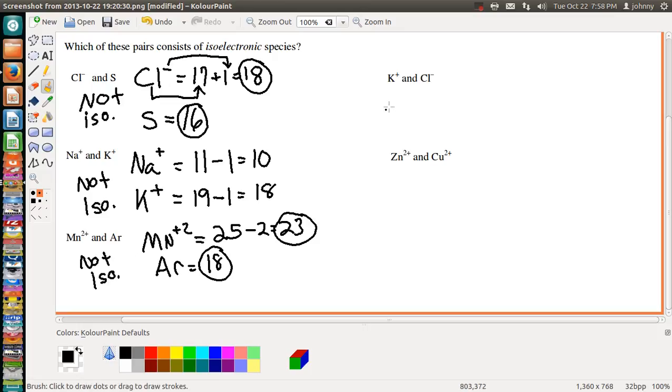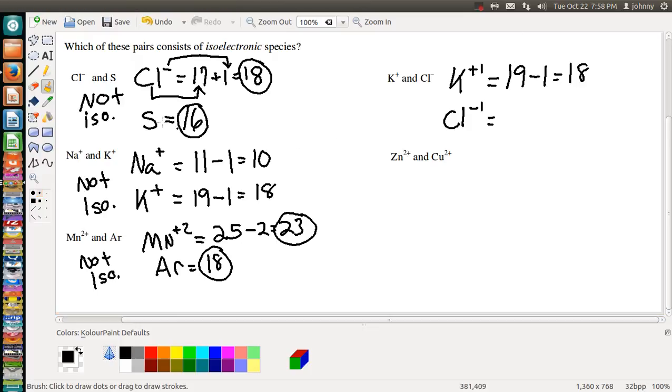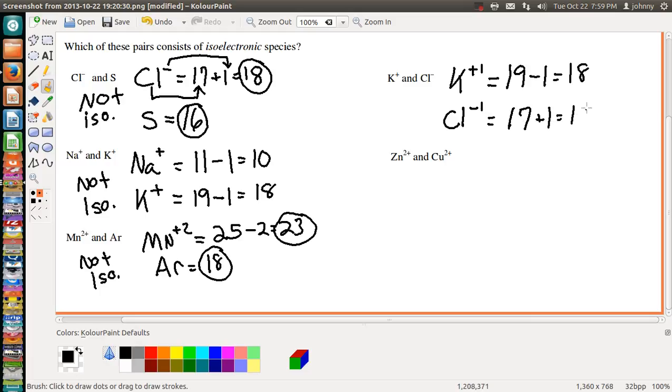Now let's look at K⁺ and Cl⁻. K⁺, we've already done K⁺. It was over here somewhere, right here. K⁺ was 19 if K was neutral. With the plus 1, we subtract 1. So that gives us 18 electrons. Now look at the Cl⁻. We've already done Cl. Cl was 17 if it was neutral. With this minus 1, that means we've got an additional electron, plus 1. So that's 18.